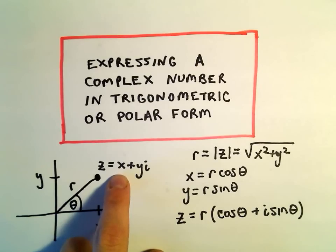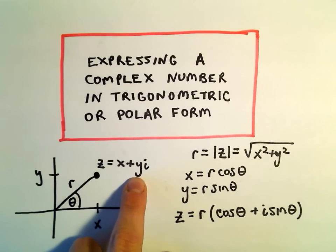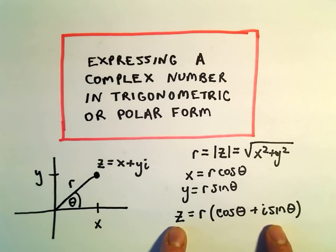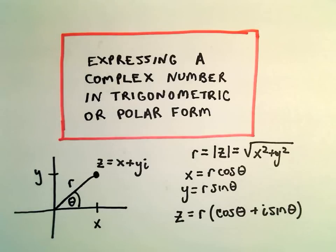If you replace the x with r cosine theta and the y with r sine theta, you can factor the r out. And it basically says we can rewrite our complex number z as r times the quantity cosine theta plus i sine theta.